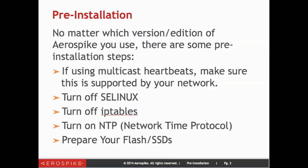The first thing is, if you're going to be using multicast heartbeats, you have to make sure that your network supports them. You also want to make sure to turn off both SE Linux and IP tables, as these can provide problems with communication from one node to another. You also want to make sure that NTP, or the network time protocol, has been turned on to ensure that all of the nodes are coordinated properly in time. And of course, if you're using flash, you want to prepare your flash or SSDs.